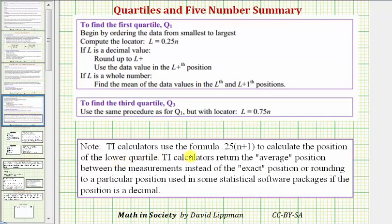The TI-83 graphing calculator uses the formula 0.25 times the quantity n plus one to calculate the position of the lower quartile, and 0.75 times the quantity n plus one to calculate the position of the upper quartile. TI graphing calculators return the average position, or the mean, between the measurements instead of the exact position or rounding to a particular position using some stat software packages if the position is a decimal.